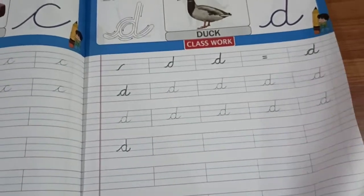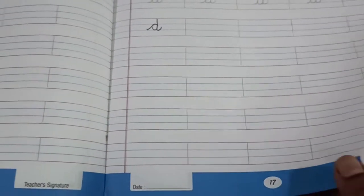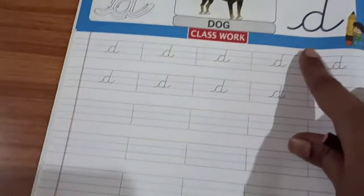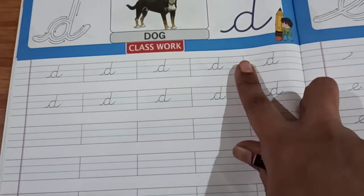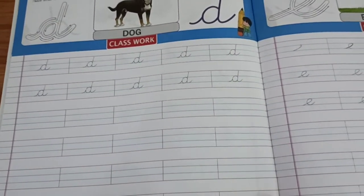In two pages we have page number 17 and page number 18, we have letter D. Complete this homework, children, in your cursive book.